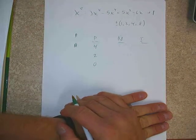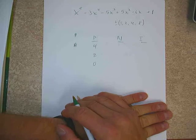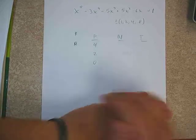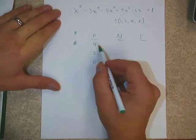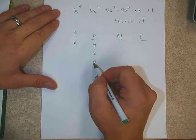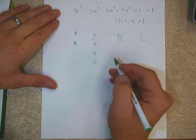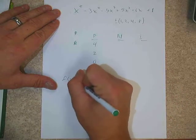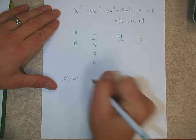I want to know what the roots might be like — how many are positive, how many are negative, etc. I could either have 4, 2, or 0 positives based on that rule of signs.